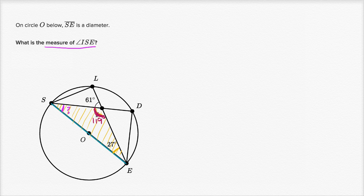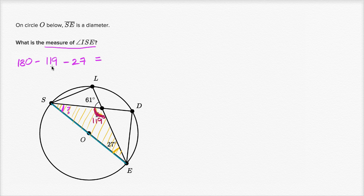So this angle that we're trying to figure out, plus the 119 degrees, plus the 27 degrees is going to be equal to 180 degrees. So we could say that this angle is going to be 180 minus 119 minus 27, which is equal to — 180 minus 119 is 61, and then 61 minus 27 is 34. So there you have it: the measure of angle ISE is 34 degrees.